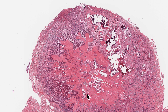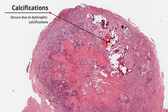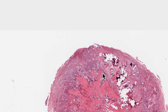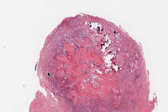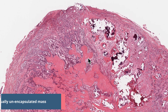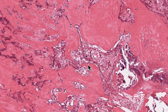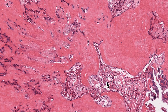This is the lower power view of calcifying epithelial odontogenic tumor. As we can clearly see at this magnification, there are areas of dystrophic calcifications — that is the reason why we see radio-opacities within the radiolucency when we take a panoramic radiograph. One more feature to notice: this mass is not encapsulated. CEOTs are usually unencapsulated and locally infiltrative.